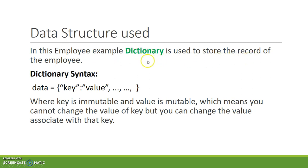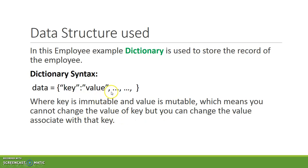The dictionary stores employee records as key-value pairs, where the key is the employee ID and the value is an object created from the Employee class. A dictionary key is an immutable object, so there are no duplicate keys and the key cannot be modified. However, you can change the value associated with that key.